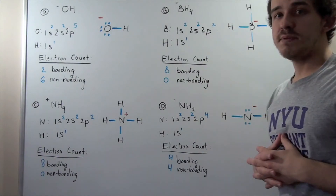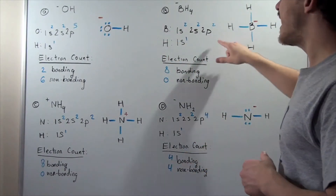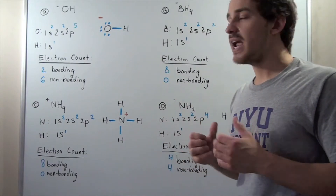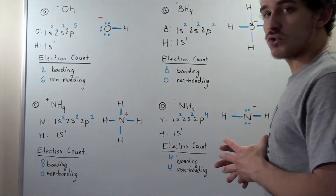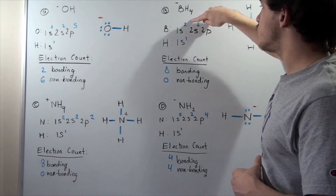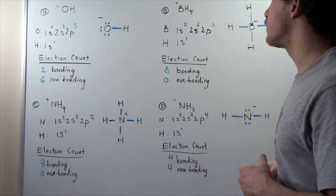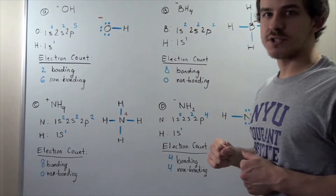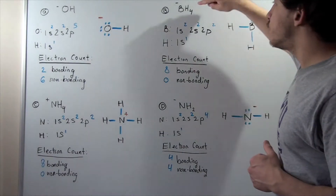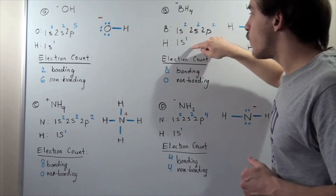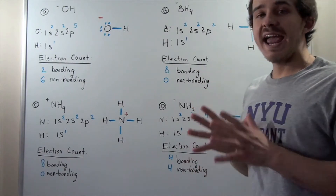Let's move to part B. In part B we have the BH₄ molecule with a negative one charge. B is boron. Normally boron has five protons and five electrons in its neutral state, but because this has a negative one charge, it has one more electron — a total of six electrons and five protons. So two go into the 1s, two into the 2s, and two into the 2p. H still has one electron in the 1s because it's neutral. Notice we have four H atoms, so four electrons come from H, and two plus two equals four electrons from boron, giving us eight valence electrons altogether.